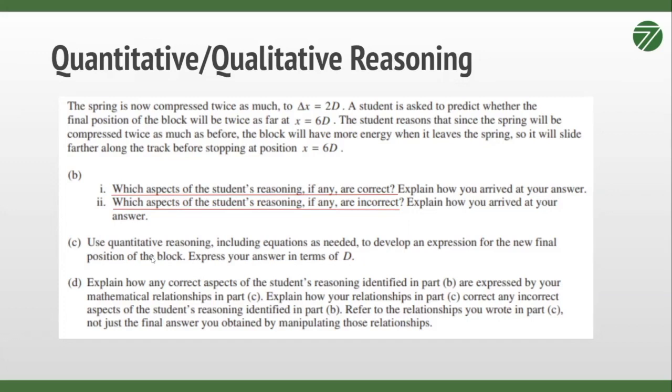Then for C they want me to do it myself. How would I solve these equations? How would I derive an equation? So there's the quantitative and the qualitative. And then we see in D, explain how any correct aspects of the student's reasoning from part B are expressed by your mathematical relationship in part C. So now we have to tie the quantitative to the qualitative and demonstrate that I can cite from my equation how these things are related.